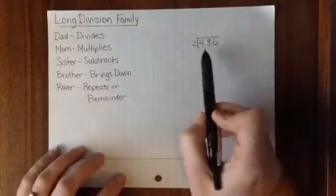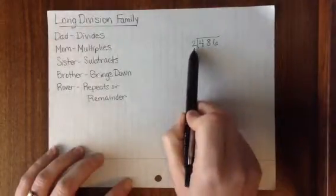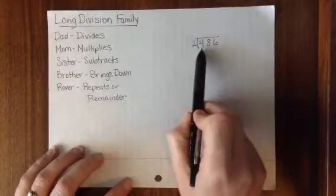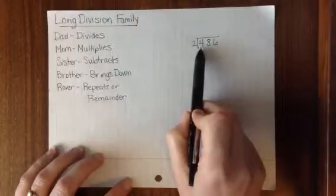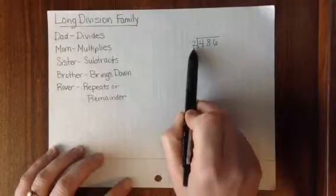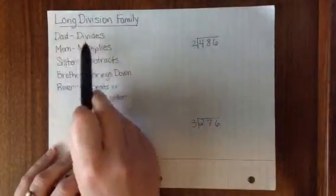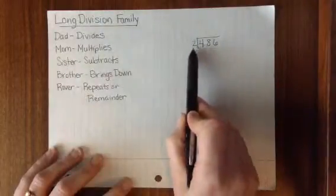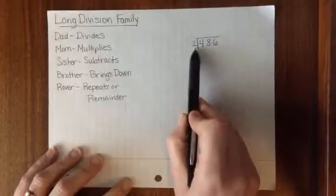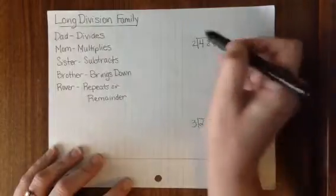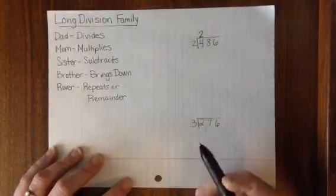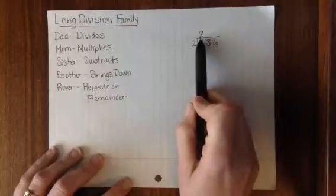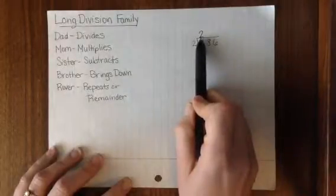In our first problem, we have 486 divided by 2. We need to first look at the first digit in our dividend to see how many times that can be divided by our divisor. Let's look at our first step, Dad divides. What is 4 divided by 2? 4 divided by 2 is 2. So we put 2 right above the 4 in our answer. The answer to a division problem is called the quotient. So the 2 is our first number in our quotient.